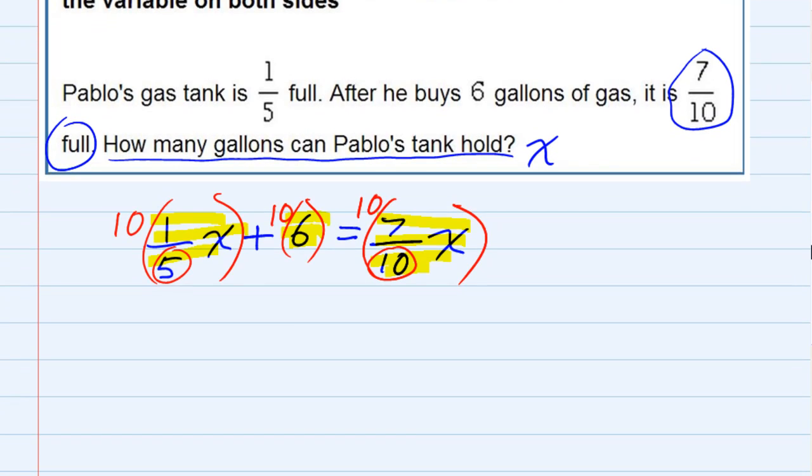The advantage of doing this is because now some canceling is gonna happen. Five goes into ten twice so I'm left with two times one x, or 2x. The next term, ten times six, is just 60. And on the right-hand side the tens cancel giving me 7x. The advantage of multiplying by the lowest common denominator is we don't have any fractions in our equation any longer, so now it's a lot easier to solve.